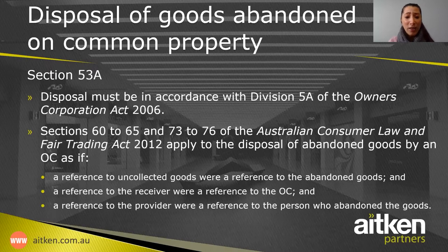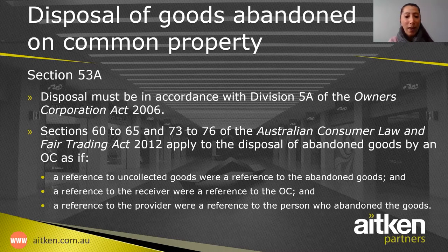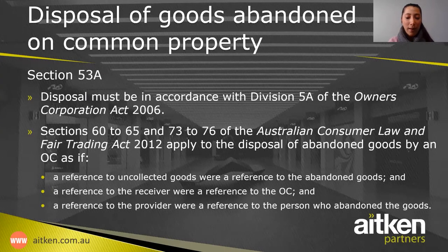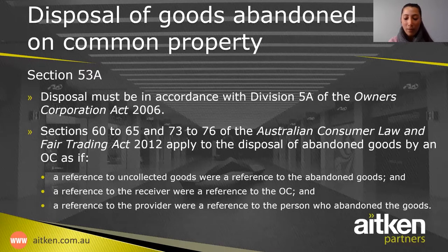In addition to that, Sections 60-65 and 73-76 of the Australian Consumer Law and Fair Trading Act of 2012 also apply to the disposal of abandoned goods by an Owners Corporation. Reference to uncollected goods is to be read as though it were a reference to abandoned goods, reference to the receiver is to be read as though it were a reference to the Owners Corporation, and a reference to the provider is to be read as though it were a reference to the person who abandoned the goods.